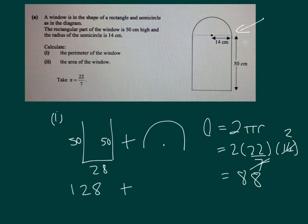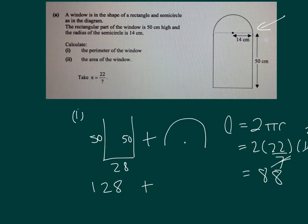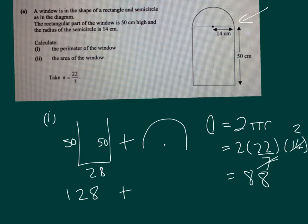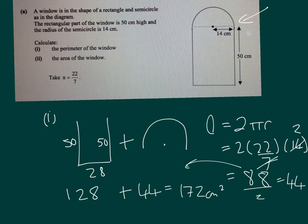We need half of that because we're talking about a semicircle. So divide by 2 and you get 44. Add the two together and we get 172 centimeters. Not too difficult.